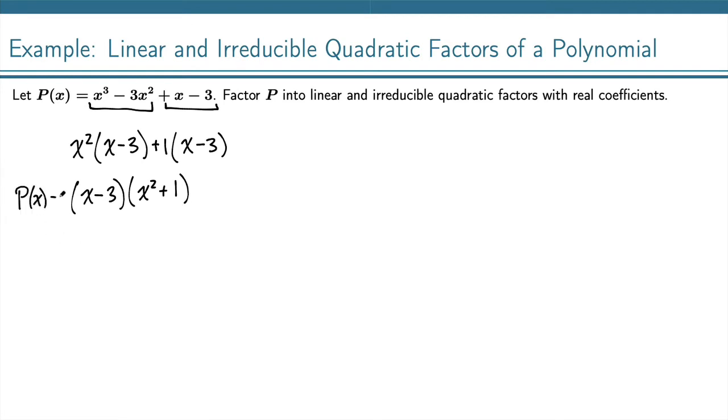So there's a factored form of P(x). This is a linear factor, x minus 3. And x squared plus 1 is quadratic, and we just want to make sure that it's irreducible.